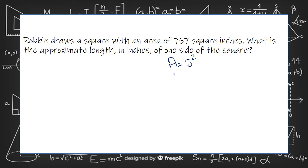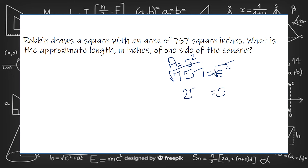So we know that 757 equals the side squared. To get rid of the square on the side, we have to take the square root of both sides. Now you could estimate this, but you can also type it in your handy-dandy calculator to get the best estimate, and that is...